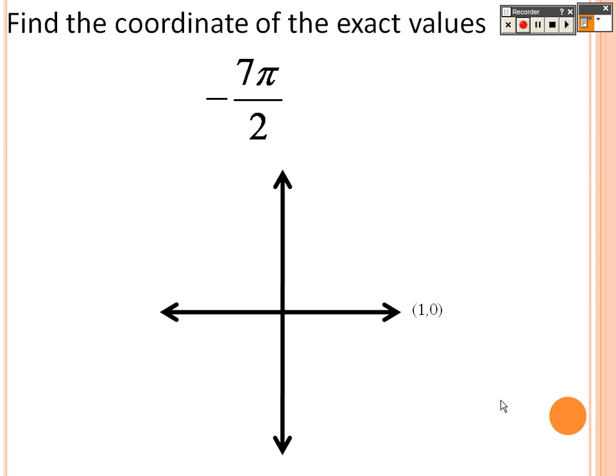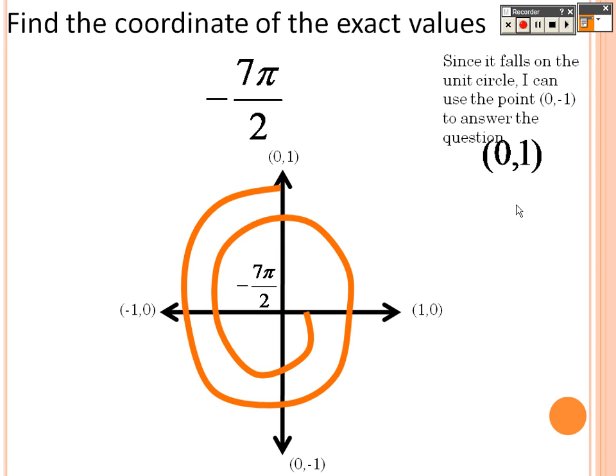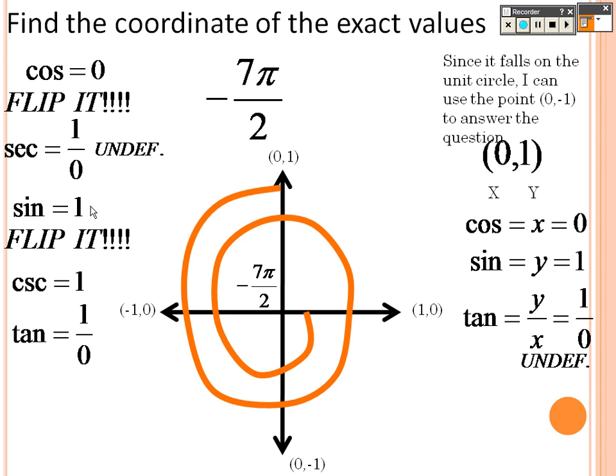Negative 7π over 2. You go around 1 the whole time in the negative direction. That would be 2π. This would be 3π. 3π is also like saying 6π over 2, so I go one more step to be 7π over 2. So it's negative 7π over 2, which is 0, 1. Remember, it's on the unit circle. x is cosine, y is sine. So cosine is 0. Sine is 1. Tangent is 1 over 0 because it's y over x, or sine over cosine. Well, that's undefined. So to find the rest, you just flip them. So cosine is 0. You flip that, you get 1 over 0 for secant, but that is undefined. Sine is 1, but when you flip 1, you get 1, so cosecant is 1. And tangent is 1 over 0. When you flip that, you end up getting 0 over 1, which cotangent is 0.